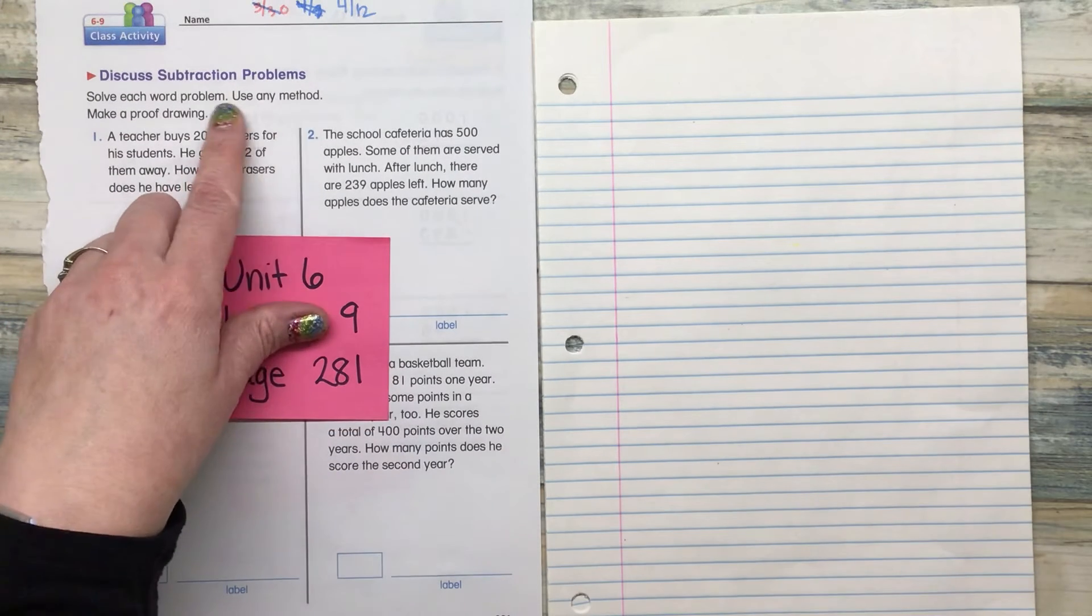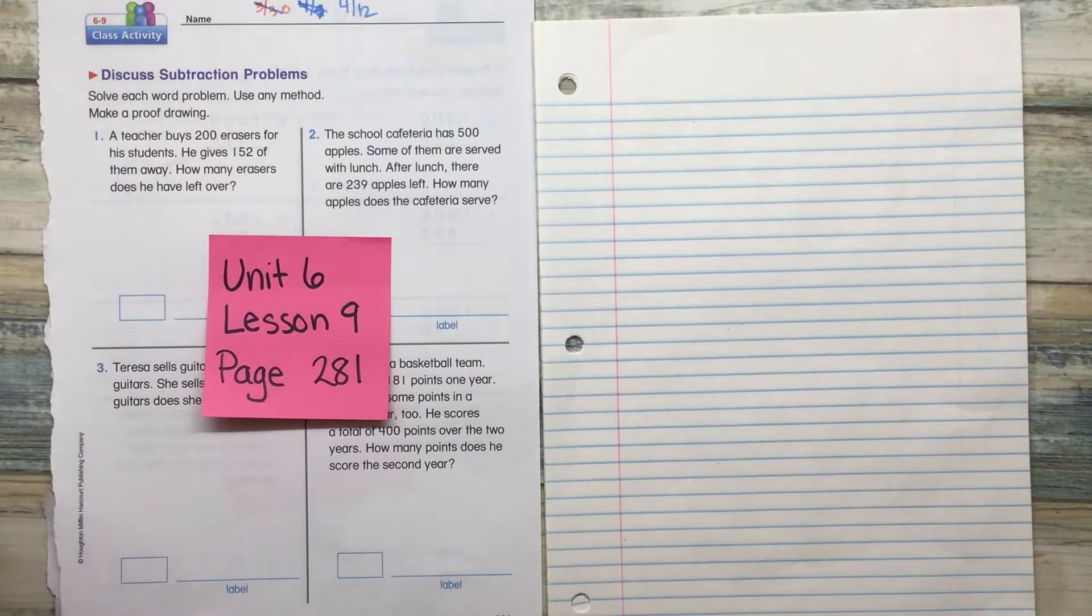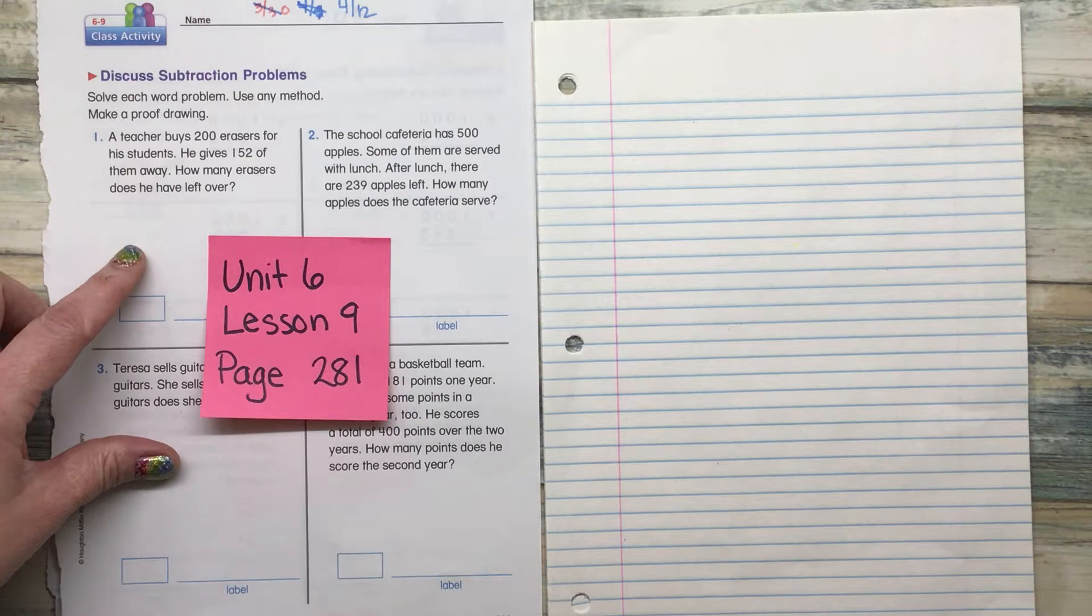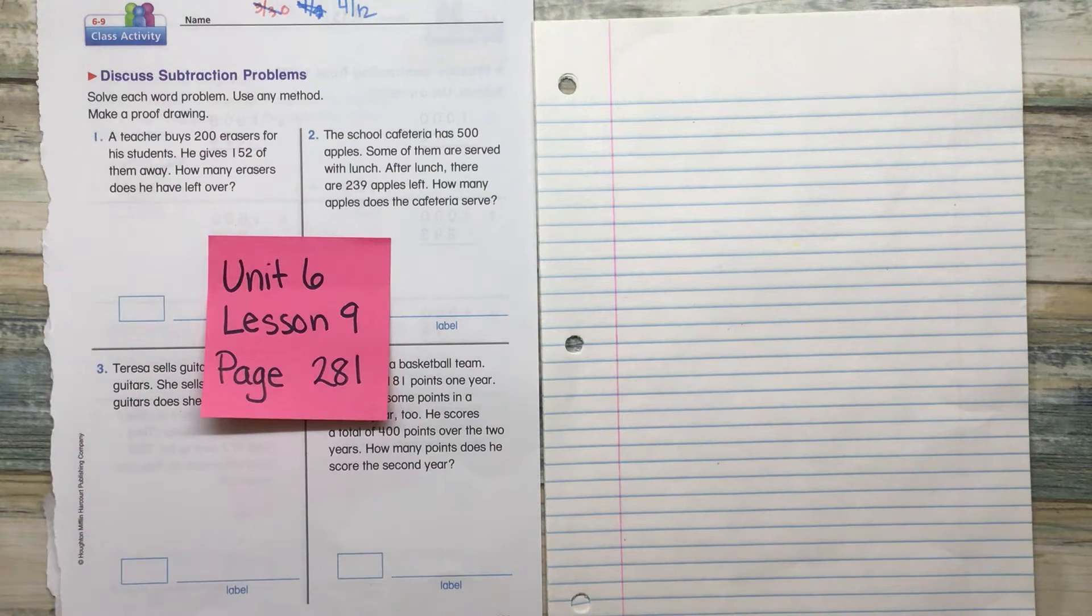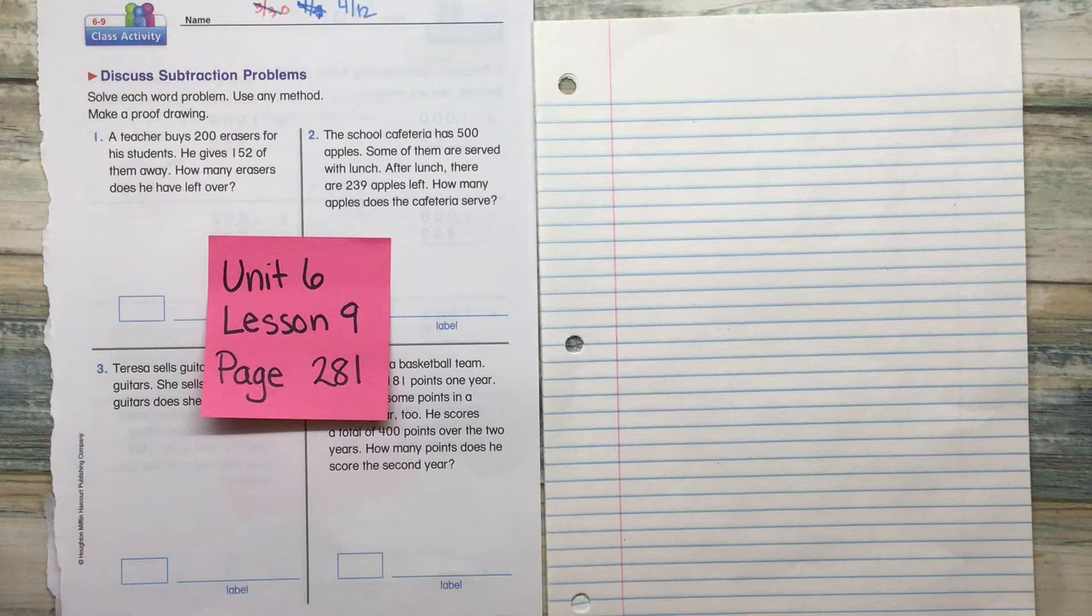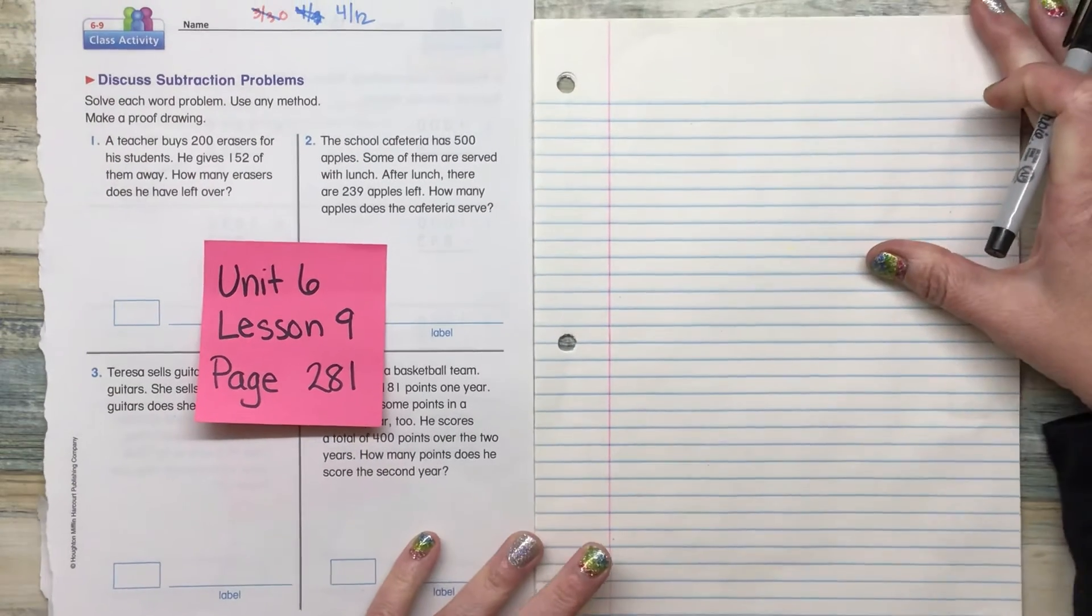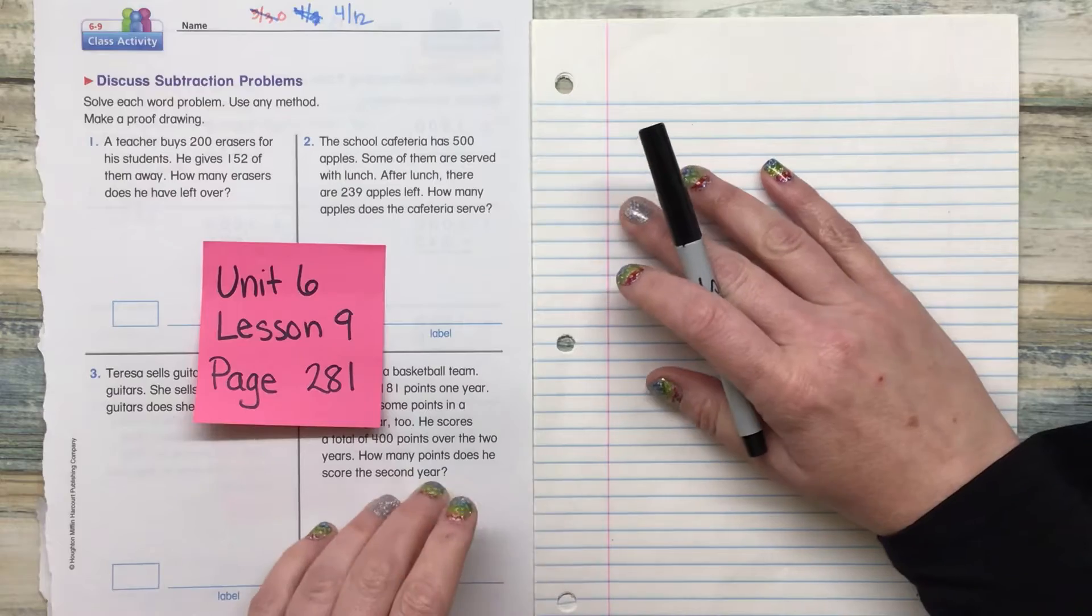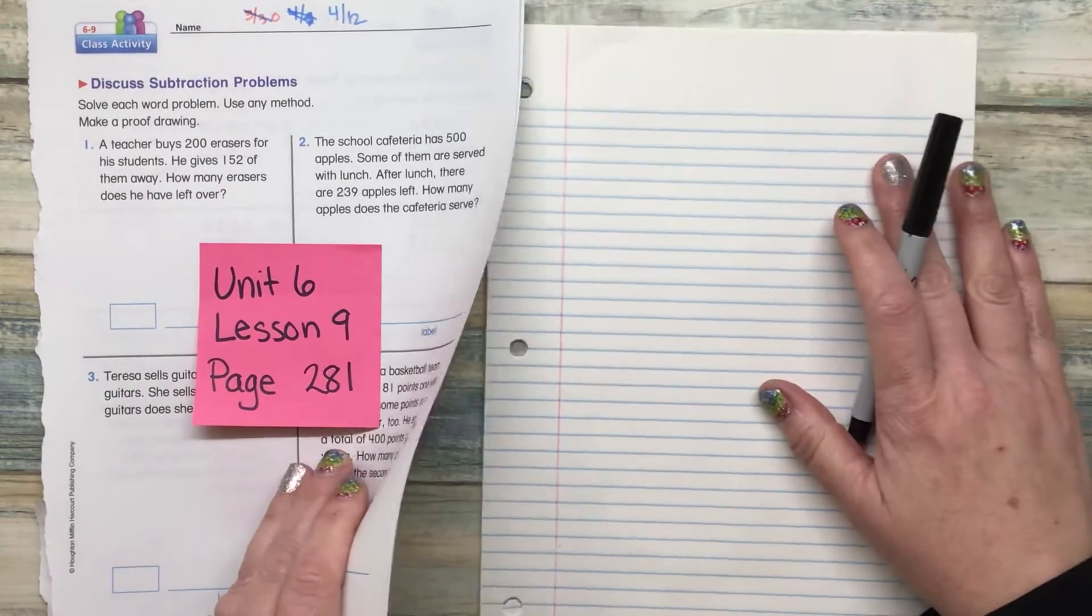It says use any method, but it also says to make a proof drawing. So what I'm going to do is make a proof drawing for this first one as I model it, and then you can choose to do a proof drawing or not. That's up to you.